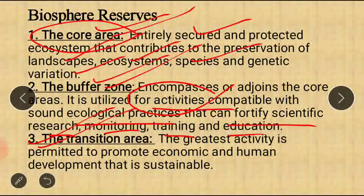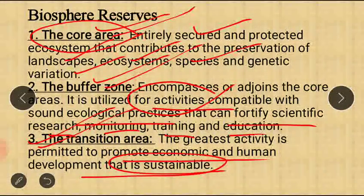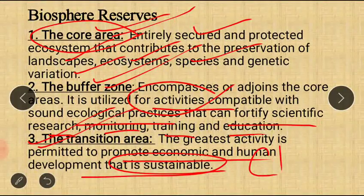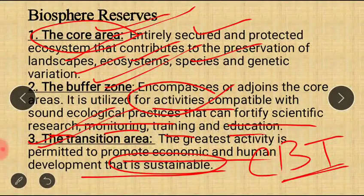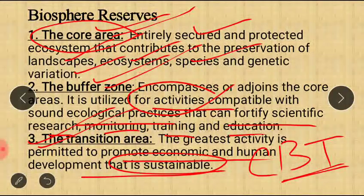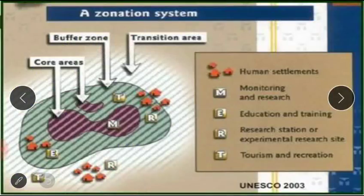The third zone is the Transition Area, where the greatest activities are permitted to promote economic and human development sustainably. To summarize the three zones — Core Area (C): entirely secure and protected ecosystem; Buffer Zone (B): limited activities compatible with sound ecological practices, supporting research, monitoring, training, and education; Transition Area (T): greatest activities permitted, including economic activities and those supporting human development.